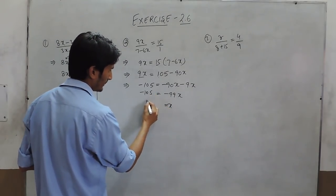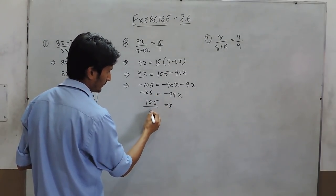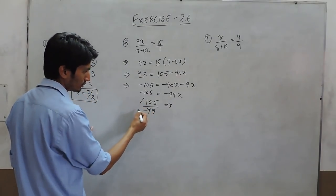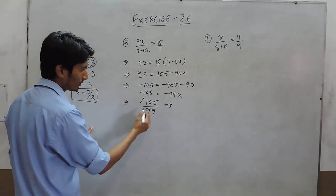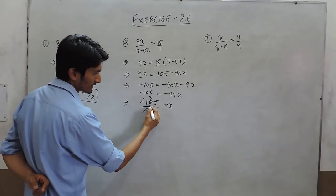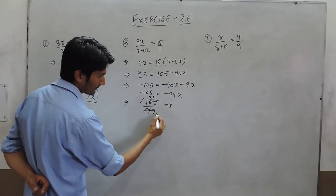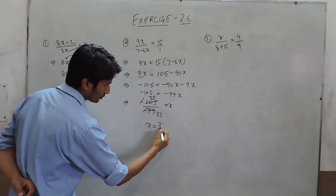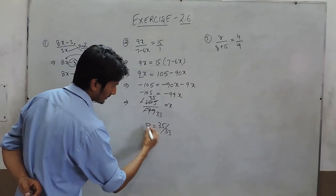So x will be equal to 105 upon 99. And both carrying negative sign, so this can simply be cancelled out. And when cancelled by 3, this is 3 times 9, and 1, 35. And this is 33. So x will be equal to 35 upon 33.